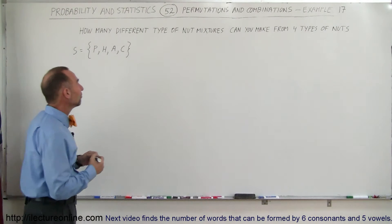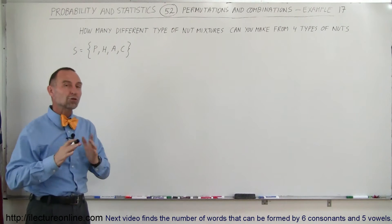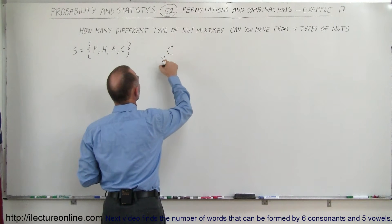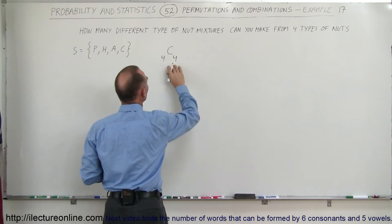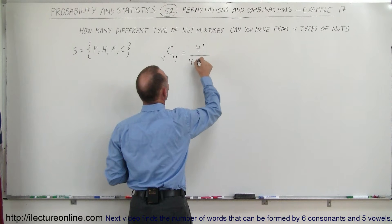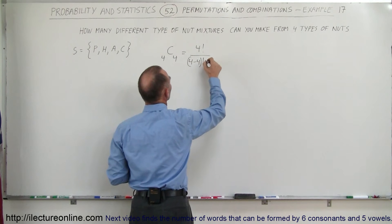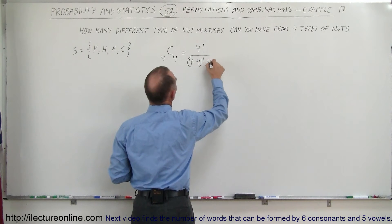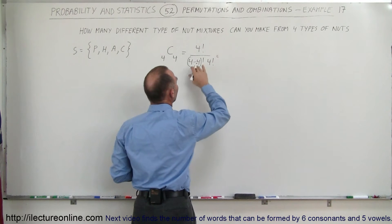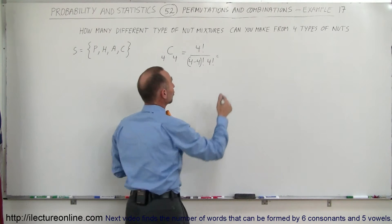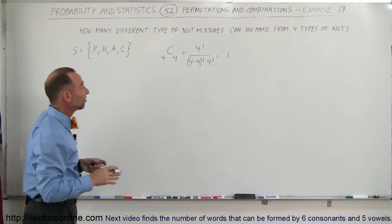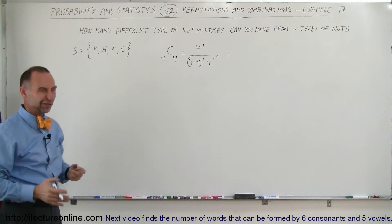The number of combinations when we use all four nuts is C(4,4), which equals four factorial divided by (four minus four) factorial times four factorial. Four factorial divided by four factorial is one, and zero factorial by definition is one, so this equals just one — there's only one mixture using all four nuts.